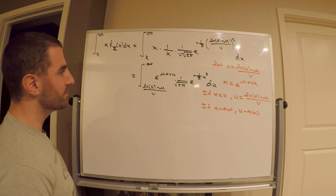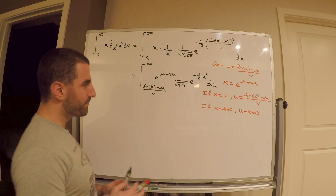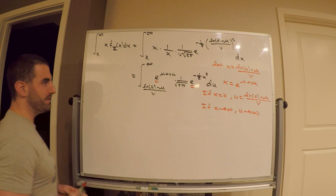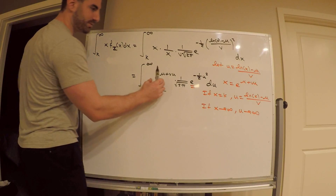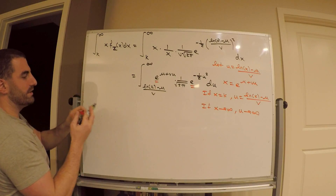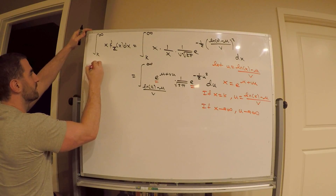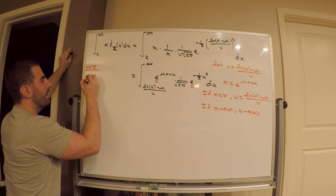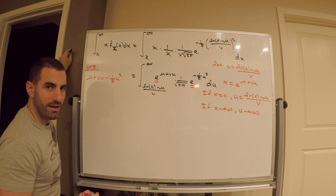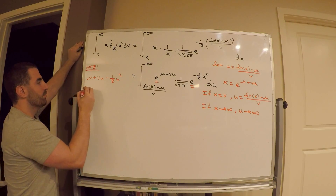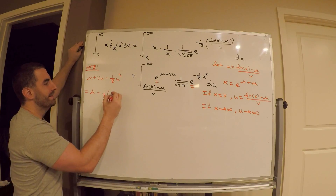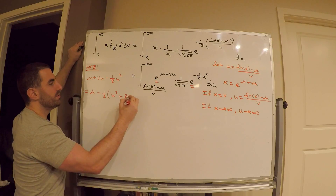This still doesn't look good. So I'm going to do some side work here. Look at these powers of e. If I multiply two exponential expressions with the same base, I add the exponents. I want to concentrate on the sum of these. Note the following: I have mu plus v times u minus 1 half u squared.